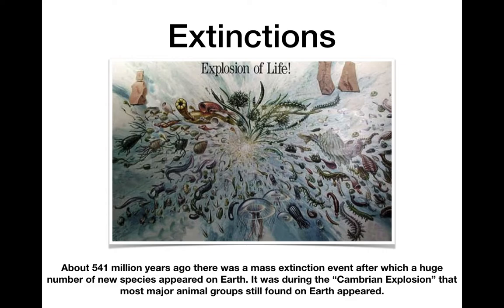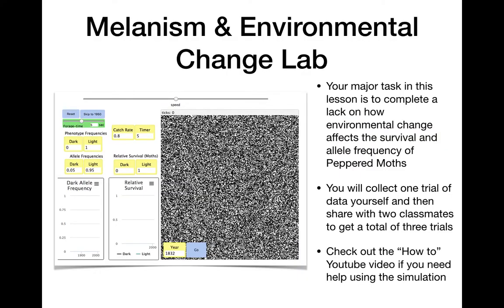That's the end of today's lesson. Your lab is on environmental change and melanism using peppered moths. The simulation shows different tree backgrounds — light and dark. You'll do one trial yourself, collecting data from 1830 to 2010 every four years, then share data with two classmates for three trials total, take the mean, and make a graph. There's a how-to video on YouTube if you need help getting started with the simulation.